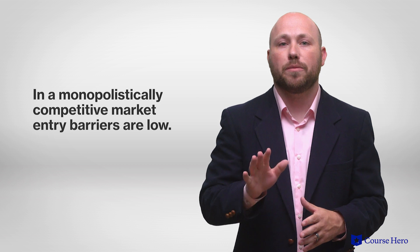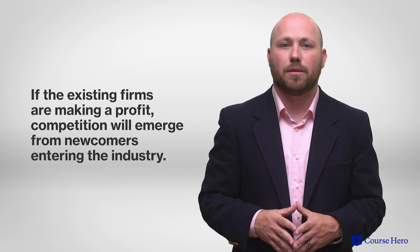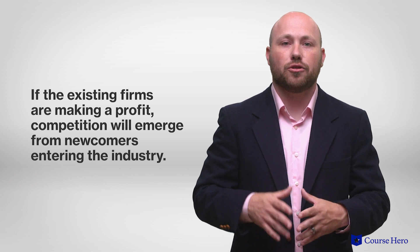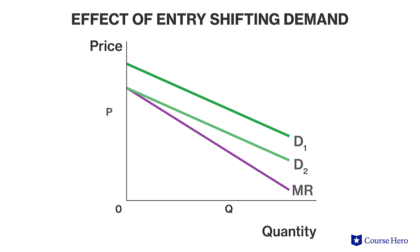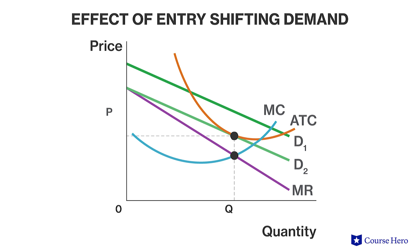In a monopolistically competitive market, entry barriers are low, so if existing firms are making a profit, competition will emerge from newcomers entering the industry. These newcomers will be able to differentiate their products to attract customers away from existing firms. As a result, the demand curve for existing, profitable firms will shift to the left. The firm will reach a long-run equilibrium when the long-run marginal cost curve crosses the marginal revenue curve where the long-run average cost curve touches the demand curve. At this combination of price and quantity, there will be no economic profit. All firms will make normal profits as in perfect competition, and newcomers will no longer be attracted to enter, so the market will stabilize.